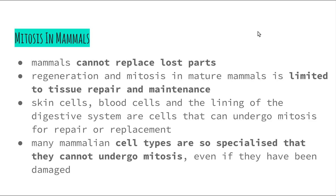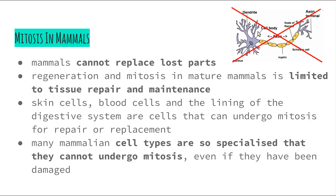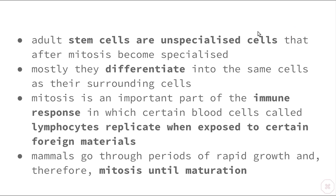There are many mammalian cell types so specialized that they actually can't undergo mitosis. If you damage them, you're not going to replace them. In particular, the neurons that carry messages around our nervous system are such highly specialized cells that we cannot replace them if they are killed or die — so it's really important to look after our nervous system. Stem cells, however, are unspecialized cells, meaning that until mitosis takes place, they can become any type of cell the body needs. There is much research into stem cells because scientists think they could use different techniques to turn them into whatever cell types are required.